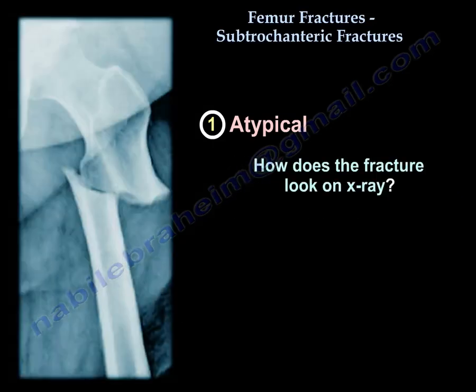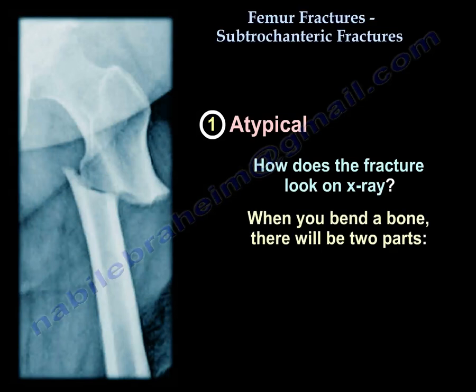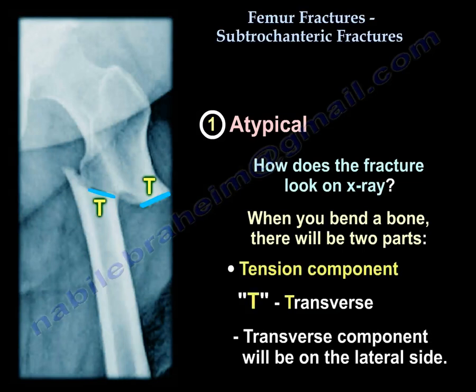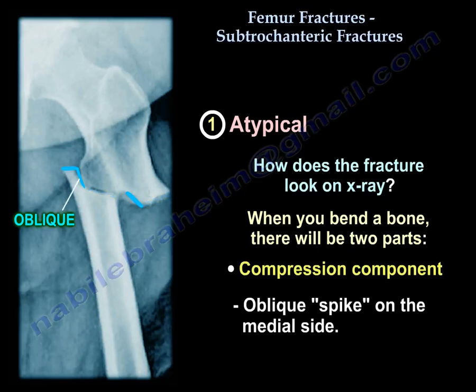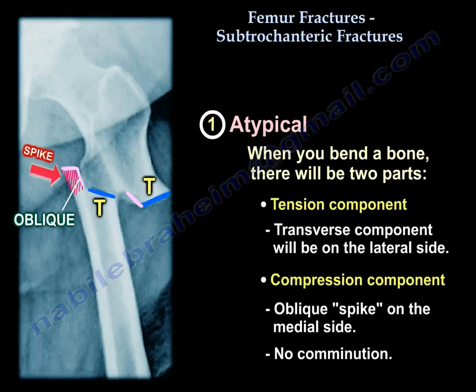On X-ray, the atypical fracture is caused by bending forces. To bend a bone, there are two components: the tension side and the compression side. Tension corresponds to transverse, so the transverse component is on the lateral side, and the compression component appears oblique on the medial side — like a spike on the medial side — with no comminution.